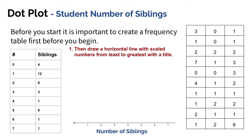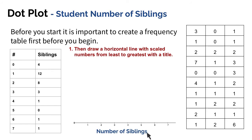What I do is start by drawing a horizontal line that's going to be scaled, and we want to make sure our scale is consistent. On this one we're counting by ones, starting with the least and going to the greatest. Then we just make sure we include a title — in this case our title is 'number of siblings.'